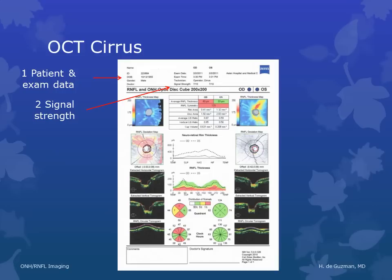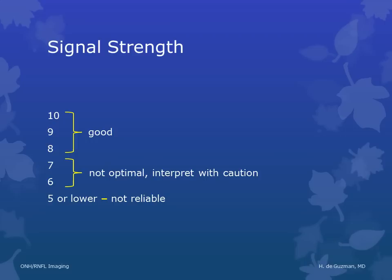Signal strength of 8, 9, or 10 are good. 6 and 7 are not optimal, but you might still be able to use those results — just interpret them with caution. A signal strength of 5 or lower is not reliable.